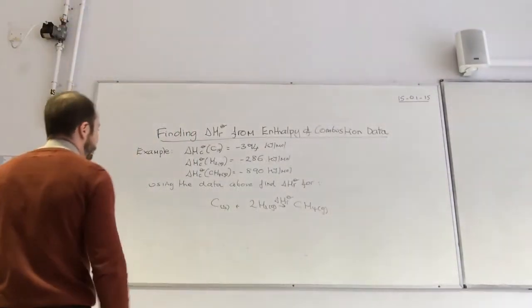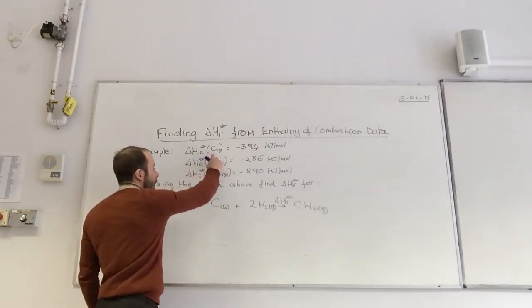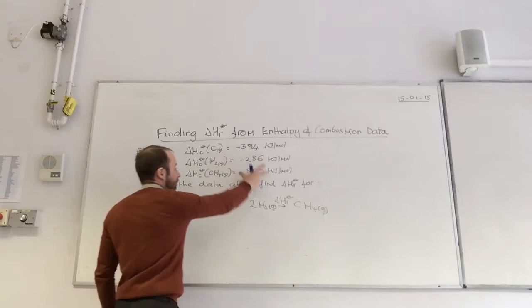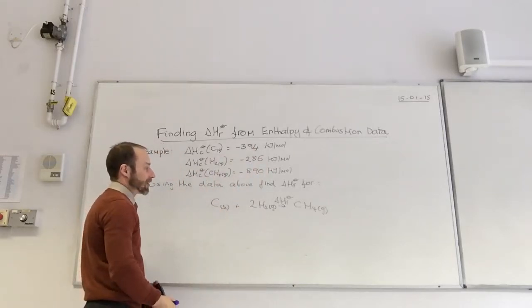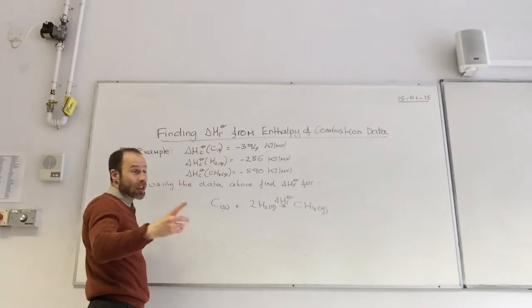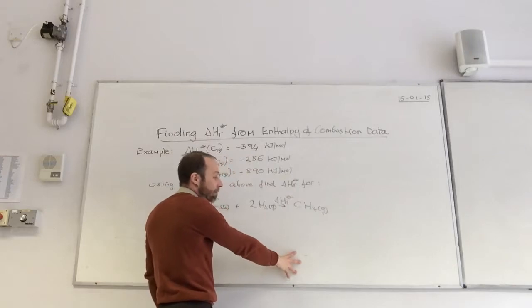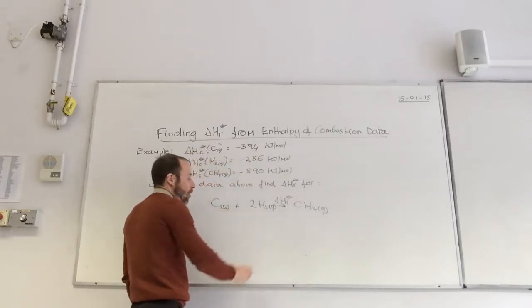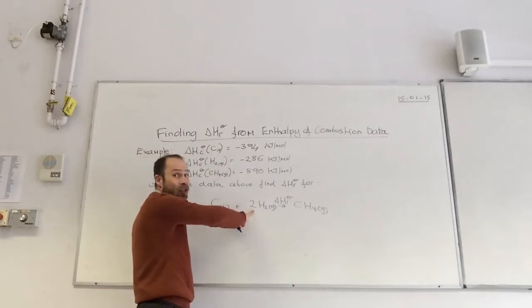So, this is a typical example. They've given you combustion data here. They've given it for carbon, hydrogen and methane. And using this data, we're going to find that reaction there. So, firstly, you look at what data they give me. They give me combustion data. So, down here are going to be combustion products.